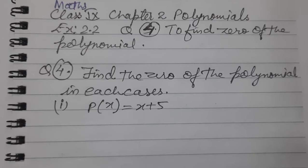Hello children once again. So we are again back to find zeros of polynomials. So let's find out. We are left with question number 4: Find the zero of the polynomial in each case. So let's find, one by one, all zeros of the given polynomials.